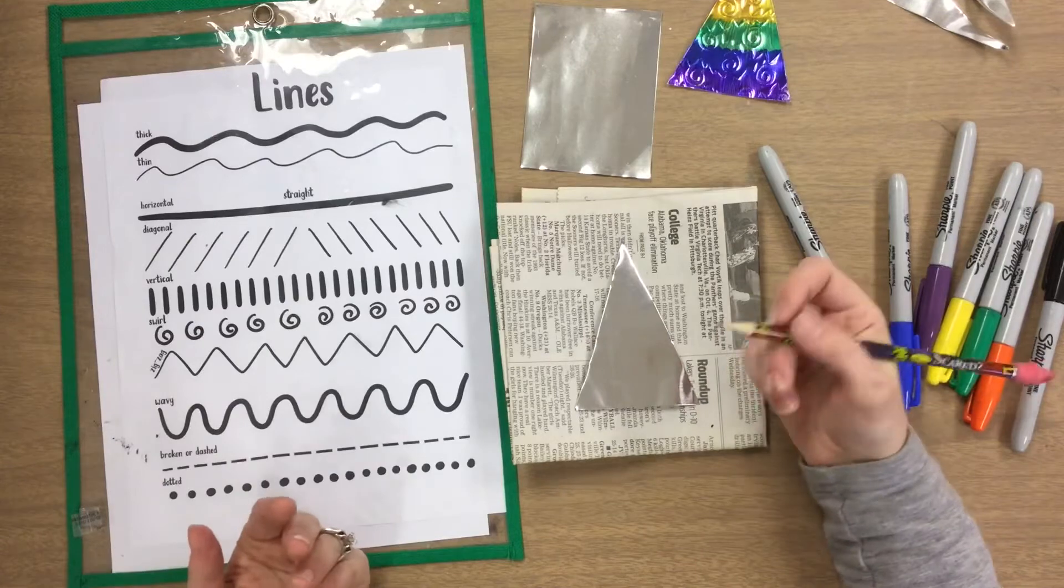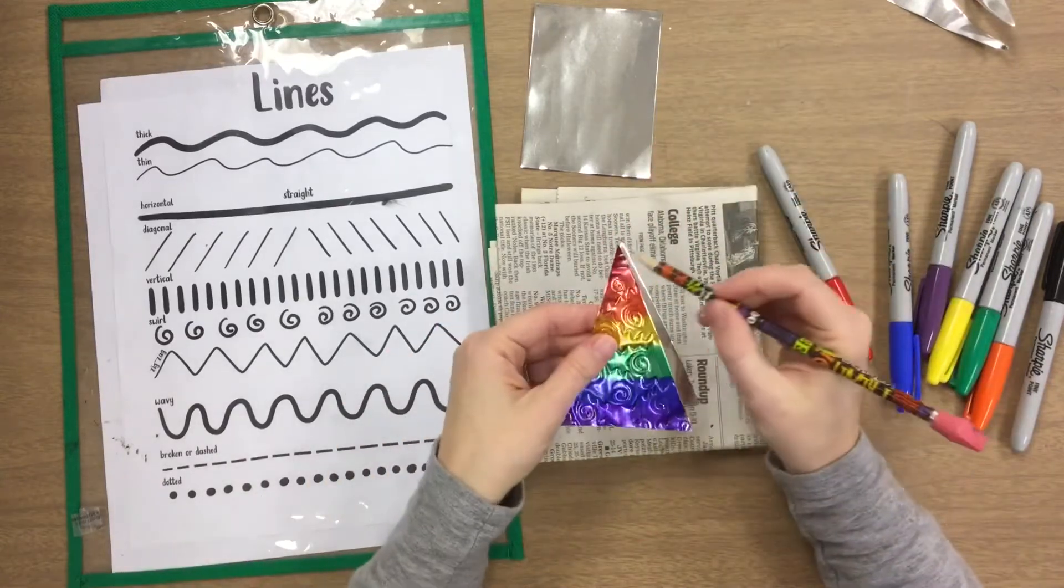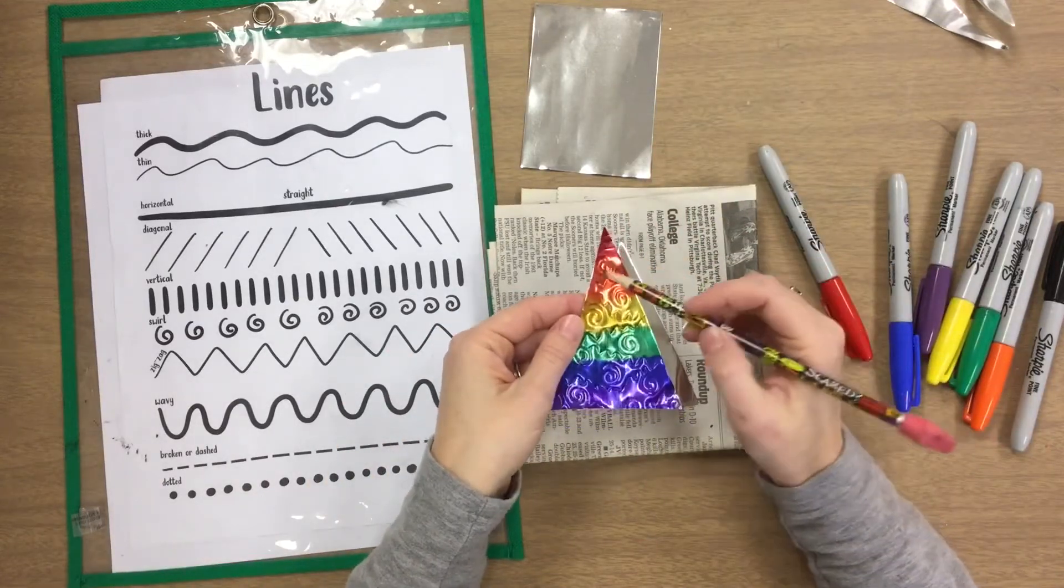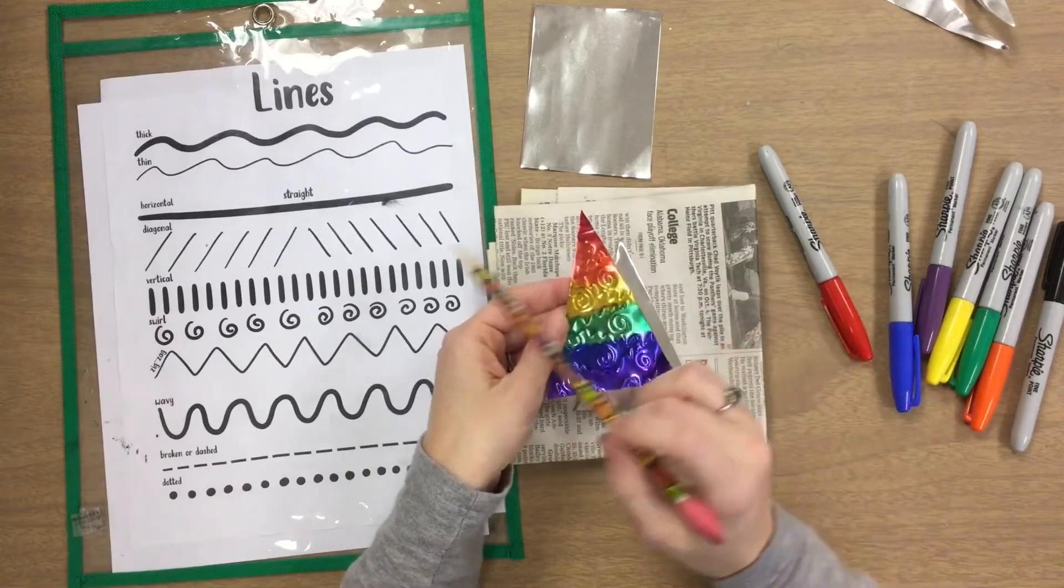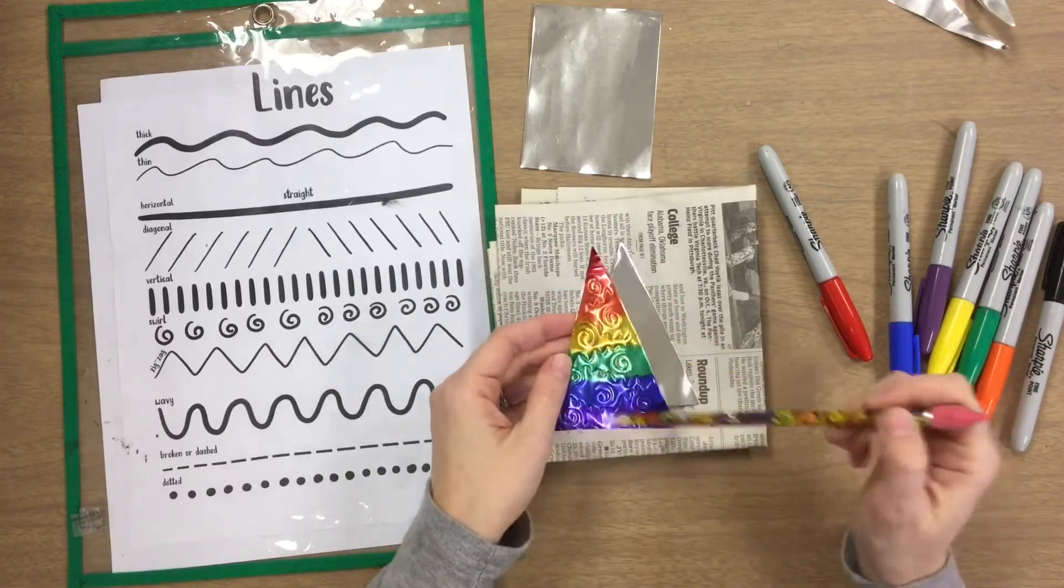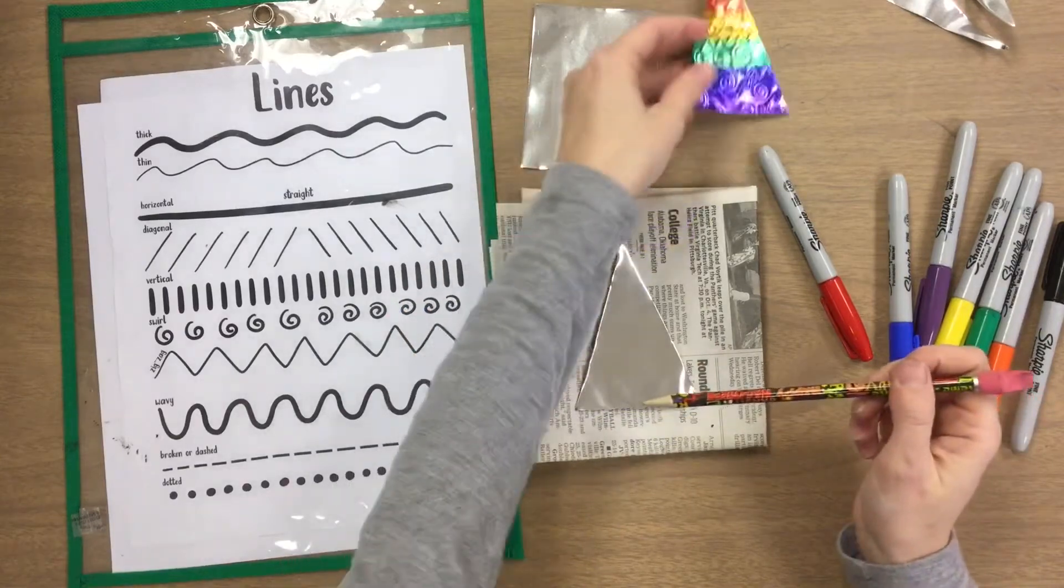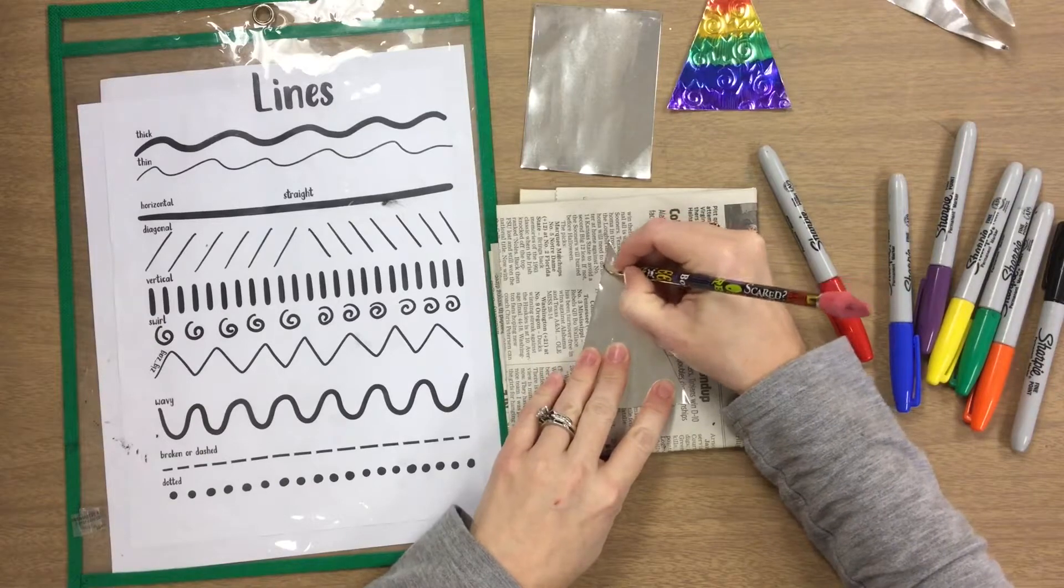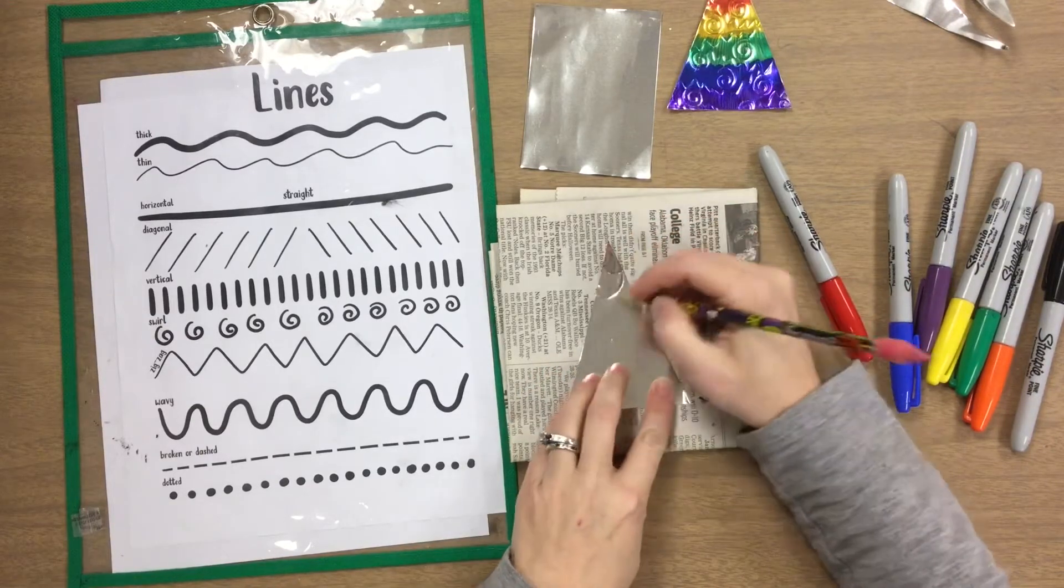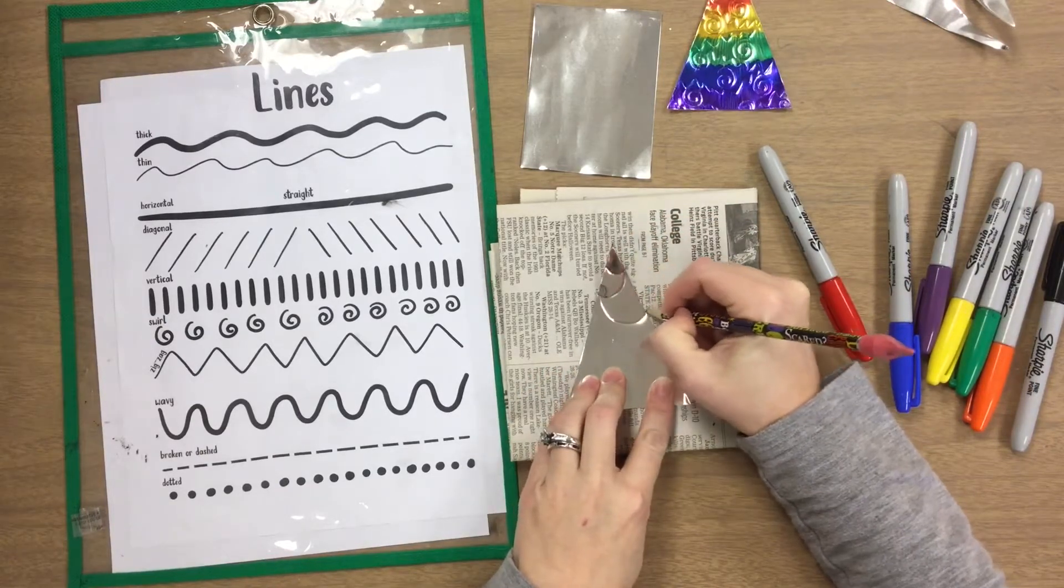I just did some horizontal lines—three horizontal lines on the top—and then I spread out some swirls and then made some zigzag lines. You decide how you want to decorate your tree. Maybe I will do some curving lines that connect and go around my tree this time.